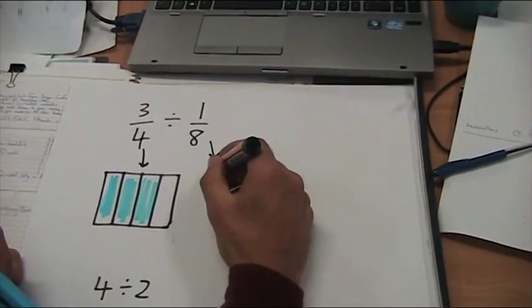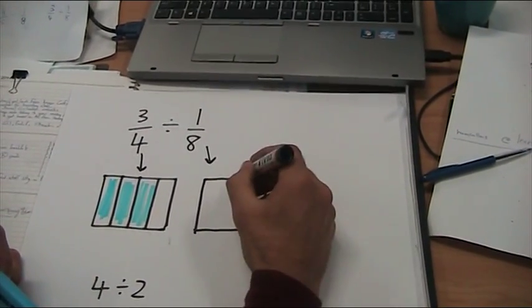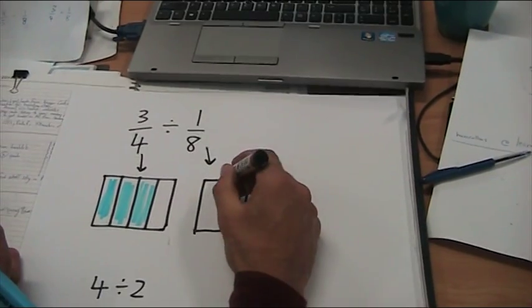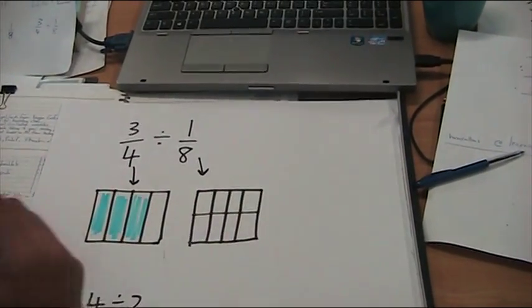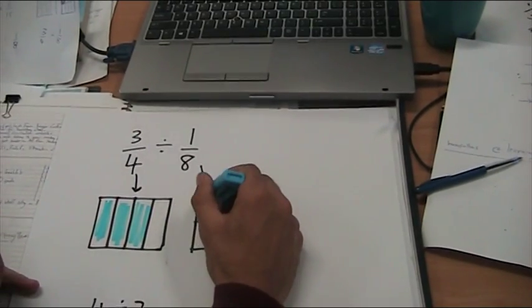If I was to draw this, how big is 1 eighth? Let's just draw another box over here. If I split this up into quarters, and then up into eighths, like this. And there's 1 eighth. Okay.